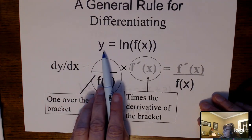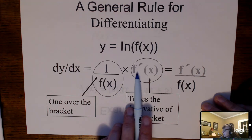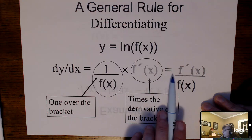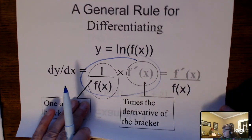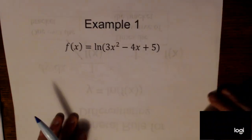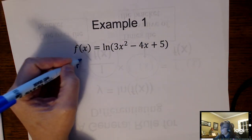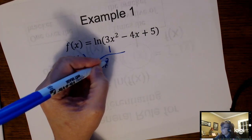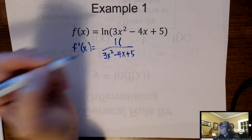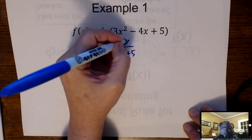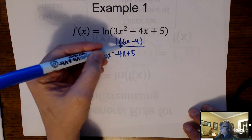If you have y equals the natural log of some function f of x, the chain rule gives you 1 over f of x times the derivative of f of x, or equivalently f prime of x over f of x. For example, with f of x equals the natural log of 3x squared minus 4x plus 5, the derivative is 1 over 3x squared minus 4x plus 5, times the derivative of the inside, which is 6x minus 4.